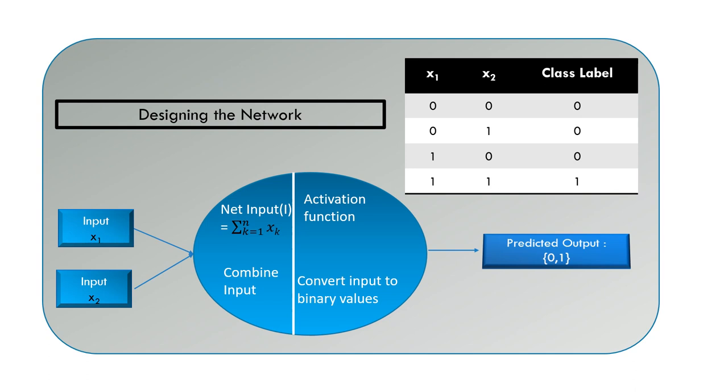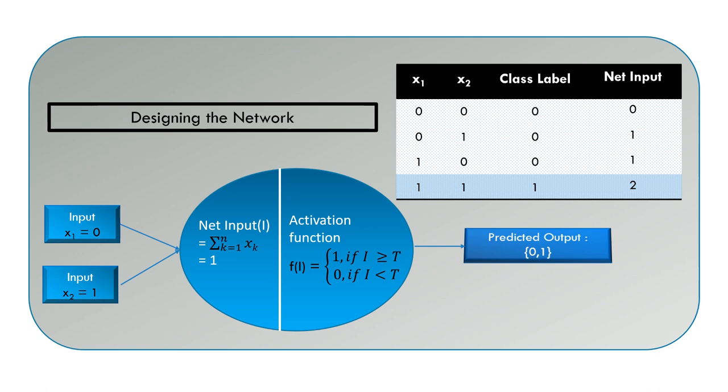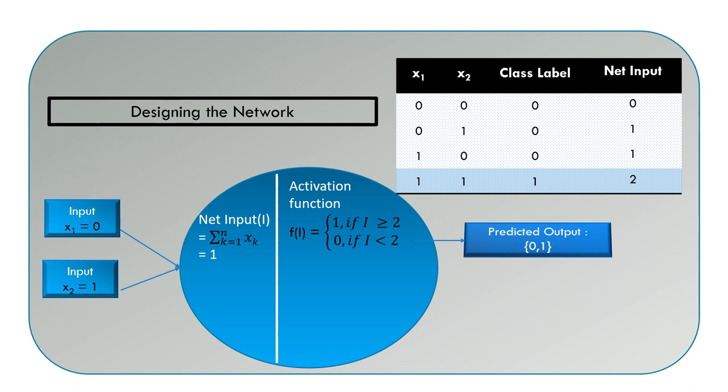We need to find that threshold that divides the 0 class from the 1 class. When we look at each row in the training set, we are able to figure out that when the net input is greater than or equal to 2, then the class is 1, else it is 0. This function is called the binary step function because there are exactly two steps representing the values 0 and 1.